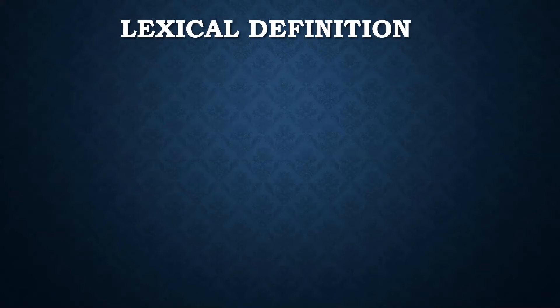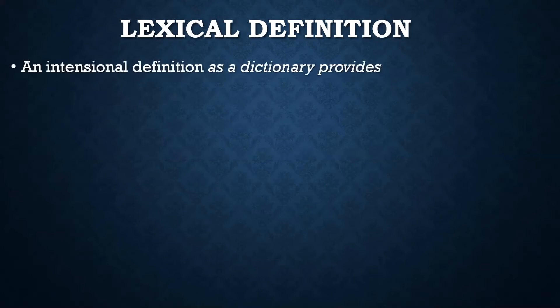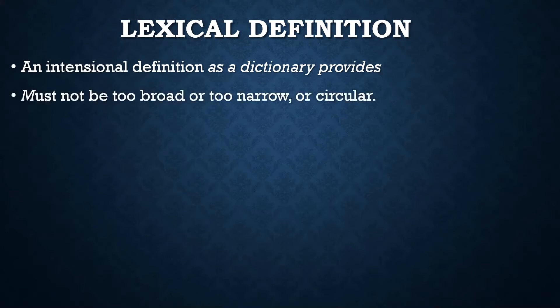A lexical definition is somewhat of an attempt at an intentional definition, but you usually don't get all the necessary and sufficient conditions for the thing. This is the kind of intentional definition that a dictionary provides. If you're writing a philosophy paper on something like justice or free will, you should not be looking up those terms in a dictionary — that's not going to help. A lexical definition must not be too broad, too narrow, or circular.